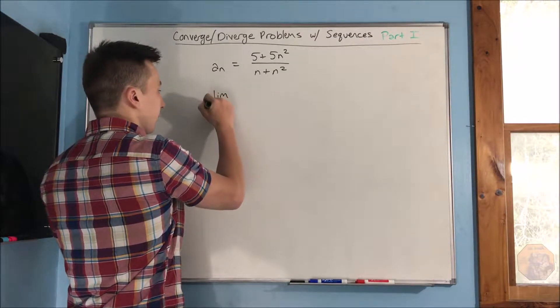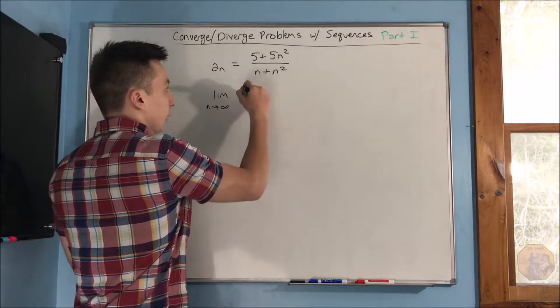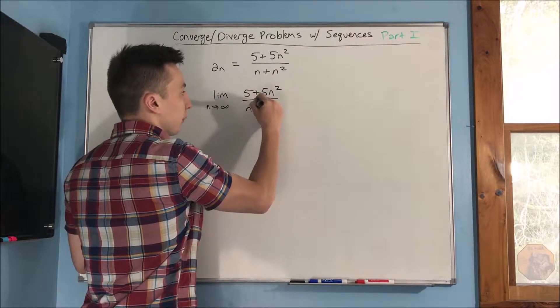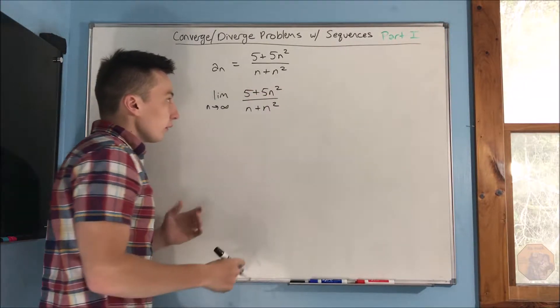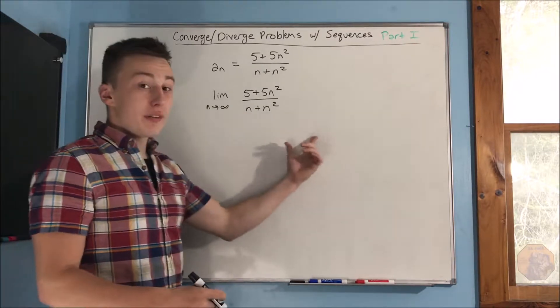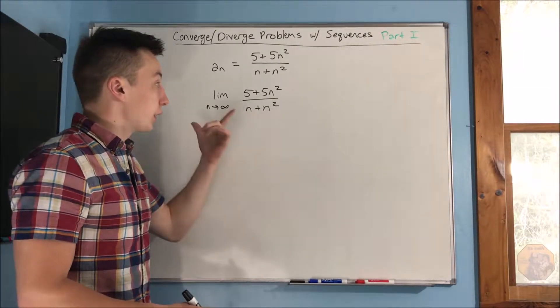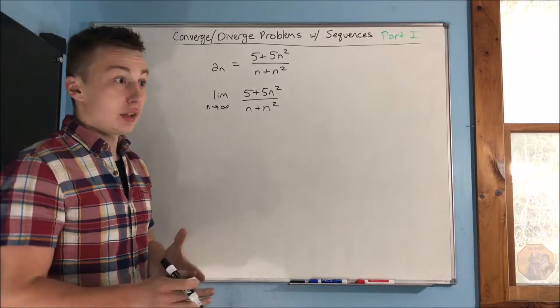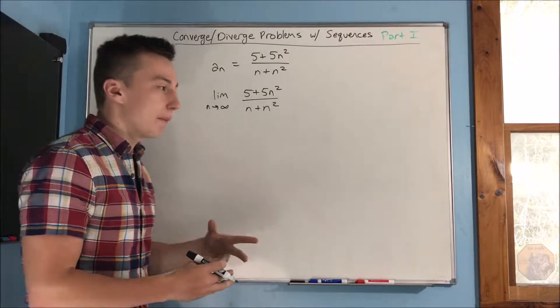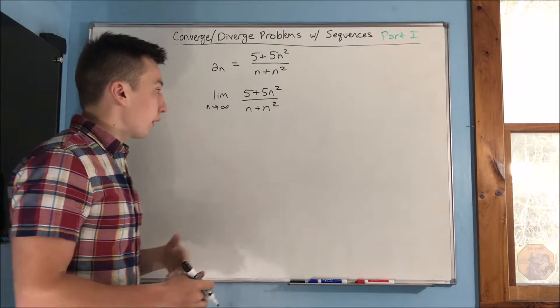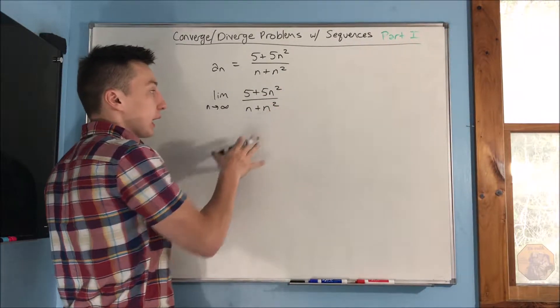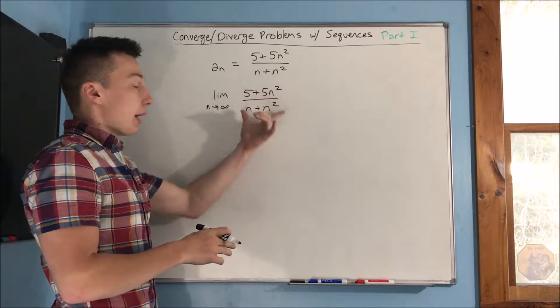So we take a limit as n approaches infinity of 5 plus 5n squared over n plus n squared. Then we can figure out whether this converges or diverges. And there's a couple different ways to do this. You can do it the calculus way or the non-calculus way. We'll start off with the non-calculus way. We can just divide every single term by the highest power of n, which we can just divide by n squared.